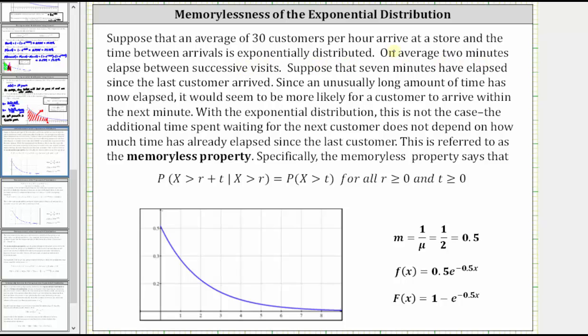On average, two minutes elapse between successive visits. Suppose that seven minutes have elapsed since the last customer arrived. Since an unusually long amount of time has now elapsed, it would seem to be more likely for a customer to arrive within the next minute. With the exponential distribution, though, this is not the case.